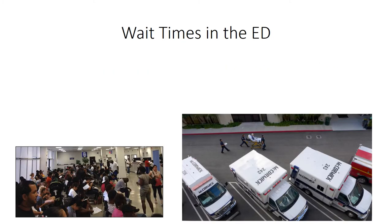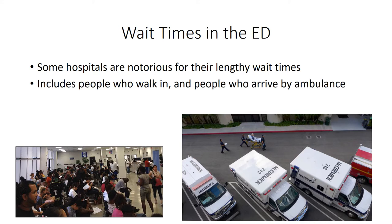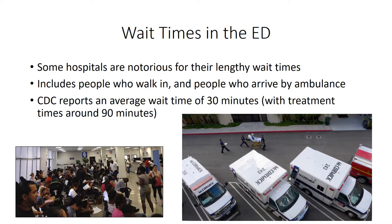Some hospitals have longer wait times than others. Wait times are influenced by the number of people who walk in, or who are brought in by ambulance, or even those who are brought in by helicopter. Other factors that influence the number of emergency department visits are the hospital's trauma designation, proximity to community members, and insurance status. In 2014, the CDC found the average wait time in the ED was 30 minutes, with the average treatment time at around 90 minutes. This means that the average ED stay is about 2 hours. Note, this does not include the length of stay if the patient becomes admitted to the hospital.